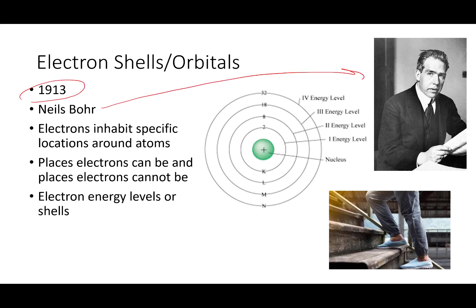By 1913, the great chemist Niels Bohr had figured out that there are places that electrons can be and places that electrons cannot be around an atom. These are called energy levels or shells. You've got the nucleus and then each energy level is a place where electrons can exist, but they cannot exist in between. Think of it as climbing stairs — you can have your foot on a step or on a step, but you can only be between steps for an instant as you are stepping. It's not a place you can hang out. Electrons are the same way: an electron can exist at one energy level or another, and they can jump between energy levels, but they cannot comfortably exist in the space in between.